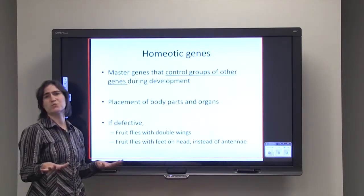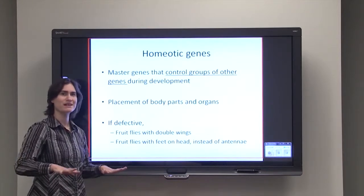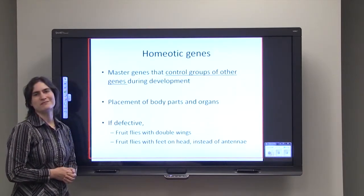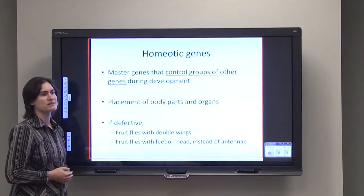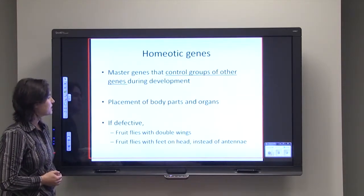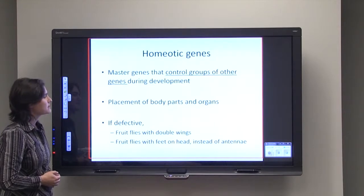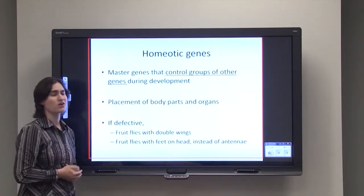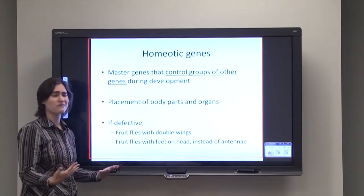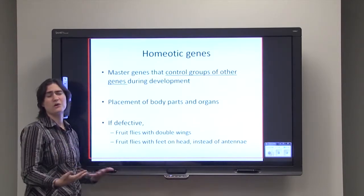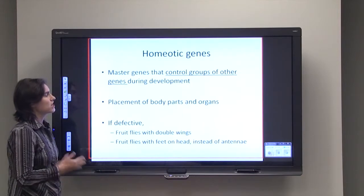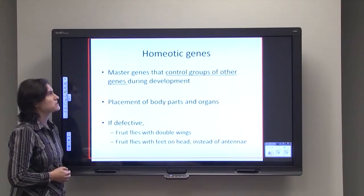Having two sets of wings sounds cool, but that second set is defective and actually inhibits the fly's ability to get around. Another mutation could result in feet on the head instead of antennae — again, those feet are not functional. You can get some very interesting changes if you mutate those homeotic genes.